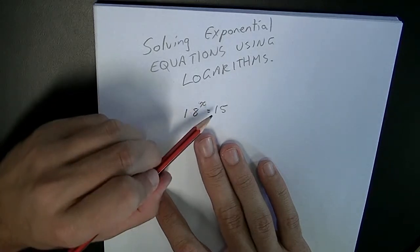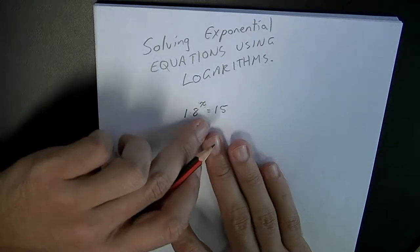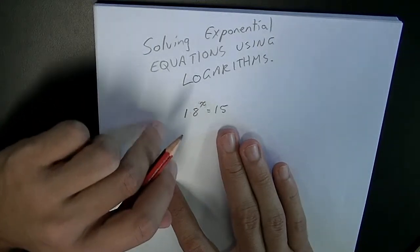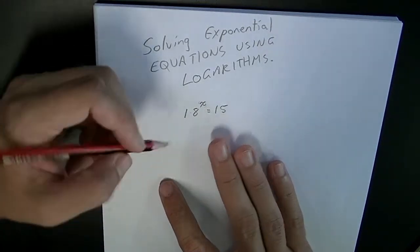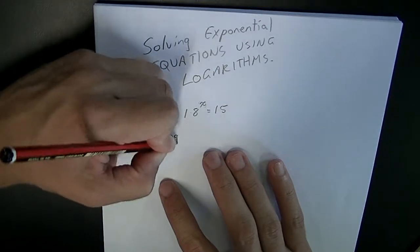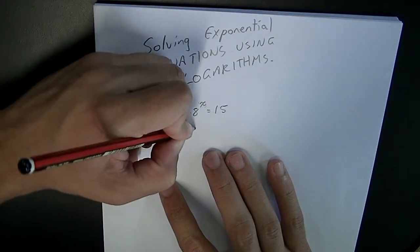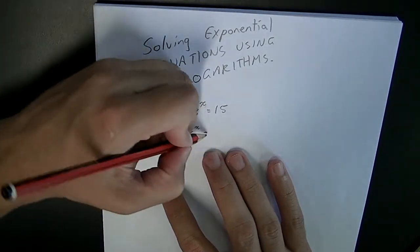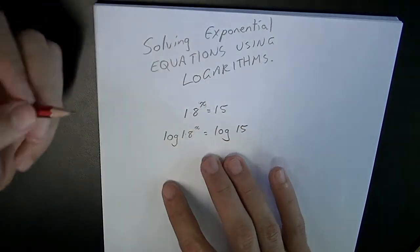A really simple way to do this using logarithms is to take the log of both sides. Apply a logarithm to both sides: log 1.8 to the power of x equals log 15.